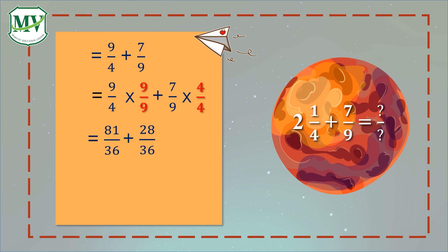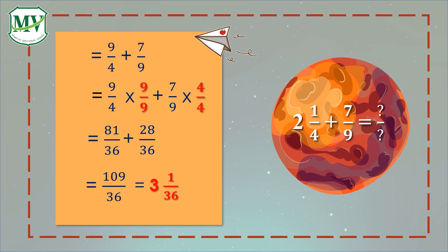The new addition sentence will be 81 over 36 plus 28 over 36. Yes, we can add them now! 81 plus 28 equals 109 over 36. We need to express this as a mixed number. 109 divided by 36 equals 3 with a remainder of 1. So, 2 and 1 over 4 plus 7 over 9 equals 3 and 1 over 36.